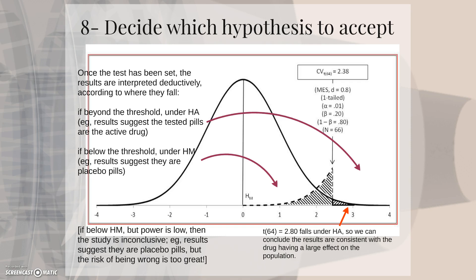One exception is if they fall under the main hypothesis but power is low, then the study is inconclusive. For example, the results suggest they are placebo pills, but the risk of being wrong is too great for making this conclusion.